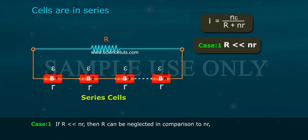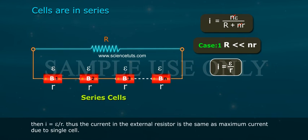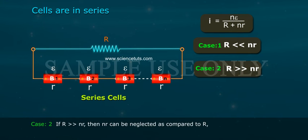If capital R much less than N r, then capital R can be neglected in comparison to N r. Then I equals epsilon by r. Thus, the current in the external resistor is the same as maximum current due to single cell.